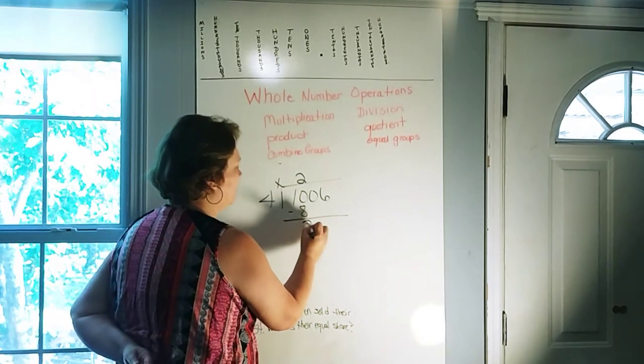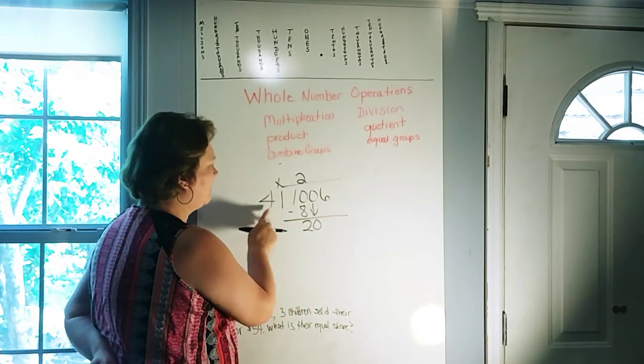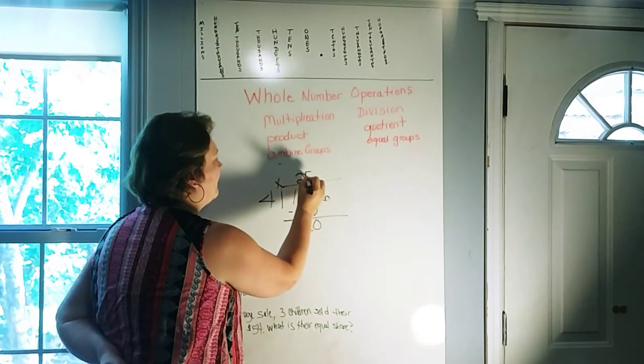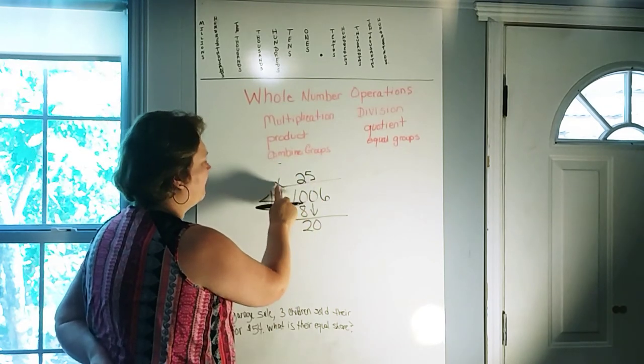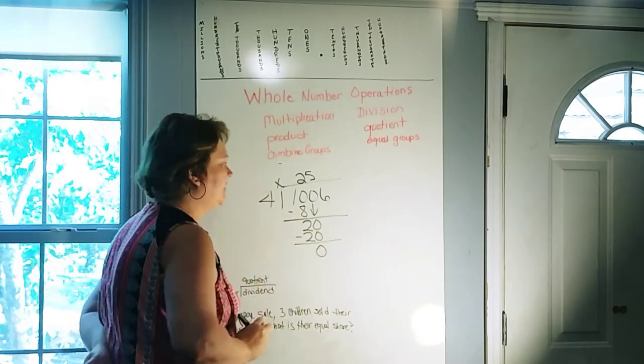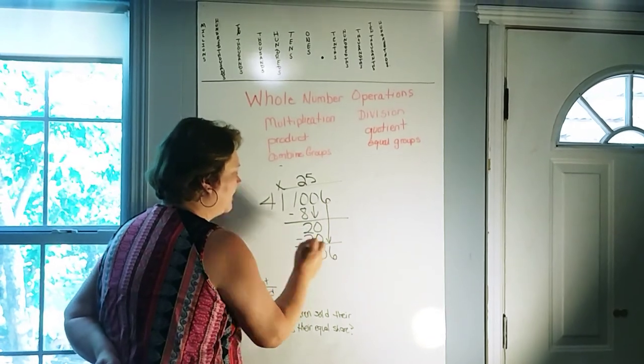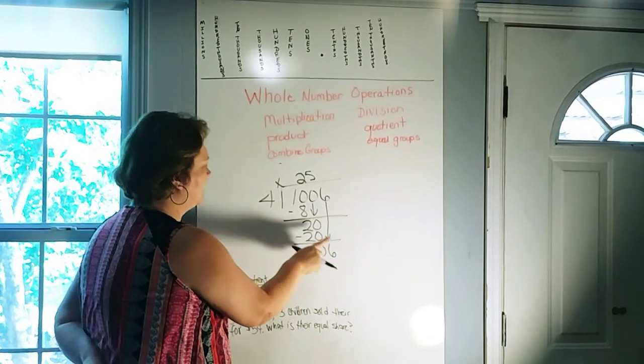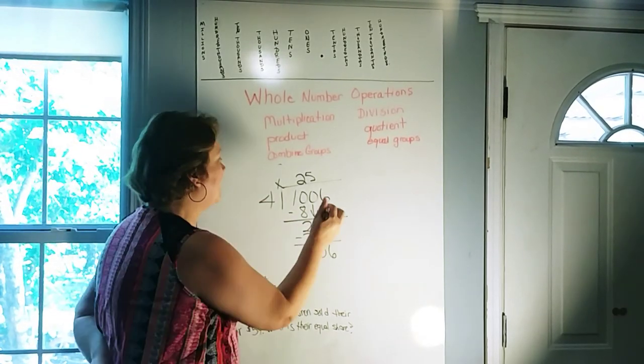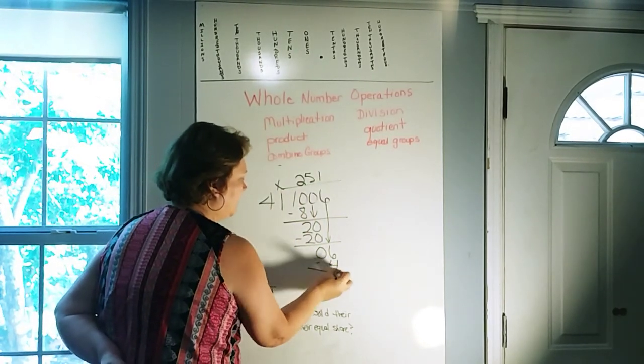We bring down our next number, which will be 0. And now we have 20 divided by 4. Well, 5 times 4 is 20. So let's put a 5 right beside that 2. Now we multiply 5 times 4. That gives us 0. We still have this 6 over here. So we need to bring that 6 all the way down. So now we have 6 divided by 4. Well, 4 times 2 was 8. That was too high. So we're going to stick with 4 times 1. 1 times 4 gives us 4. We subtract that.